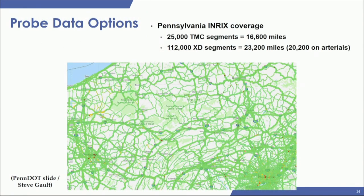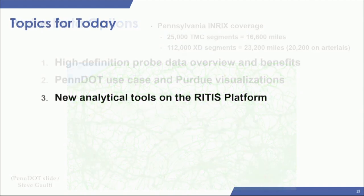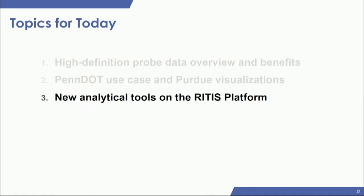The CAT Lab got involved with Purdue University and PennDOT because the use case and proof of concept went really well. They wanted to scale up to cover their whole network, which was over 100,000 XD segments. As visualization and big data experts, we helped create visualization tools that could scale to the size they needed. Now we'll demo the tools currently available on the RITIS platform.